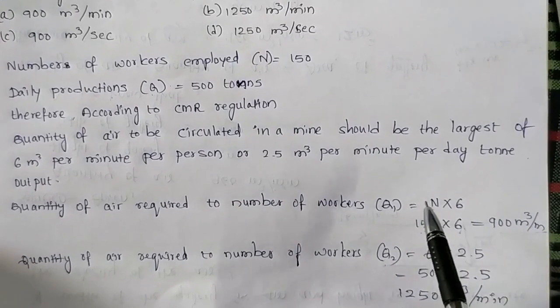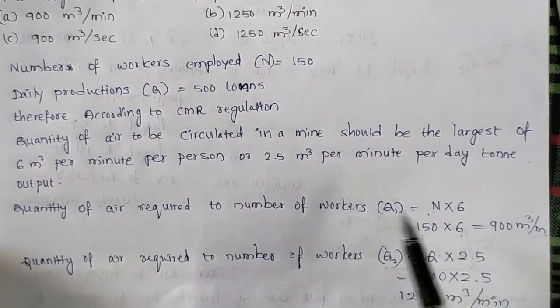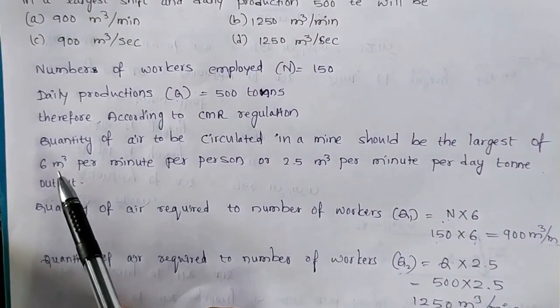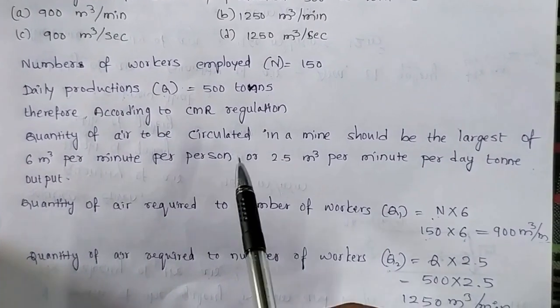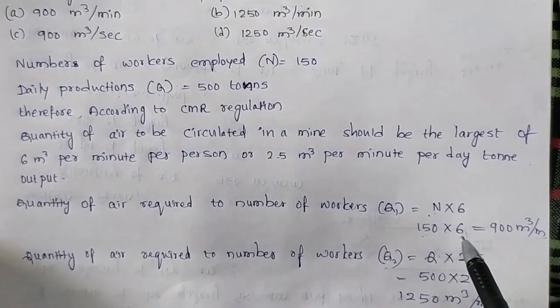Some people have doubt how it will come. 6 is already according to regulations, 6 meter cube per minute per person required. So that is why 6 here it will came.